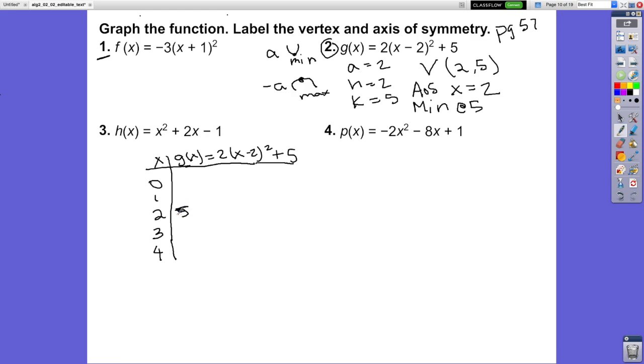Let's start with x = 1. Plugging in 1: 1 - 2 = -1, (-1)² = 1, 1 × 2 = 2, 2 + 5 = 7.